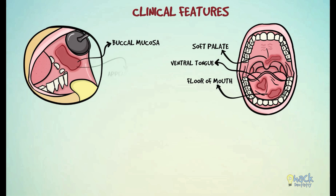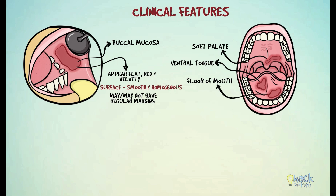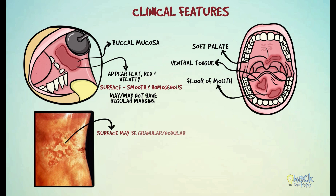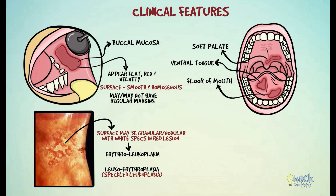Erythroplakic lesions are flat, red, and velvety, and may or may not have regular margins. The surface of the lesion is usually smooth and homogeneous, but may also be granular or nodular, with specks of white spots interspersed in the lesion. Such lesions may be called Erythroleukoplakia, Leukoerythroplakia, Speckle Leukoplakia, or Speckled Erythroplakia.